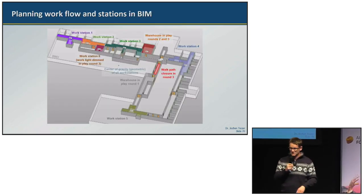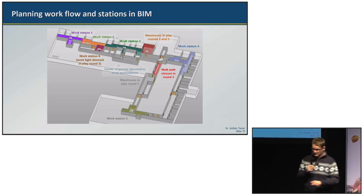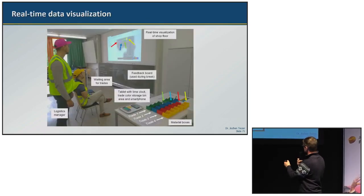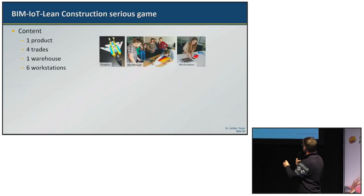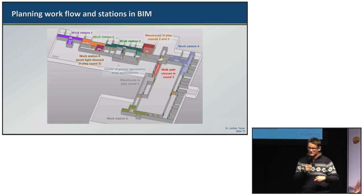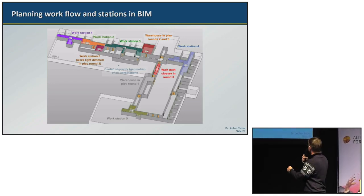Here are the workstations. You see here six workstations in different colors. I want to note that we have one room in round three - in round three it has been made dark and this walkway path was closed in the third round just to expose them to some random events that can happen in construction.